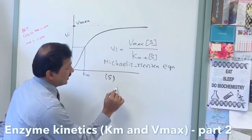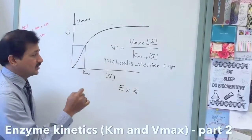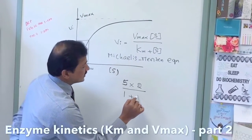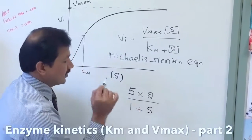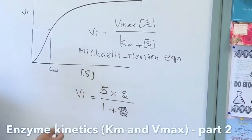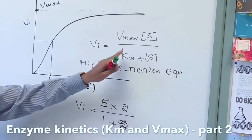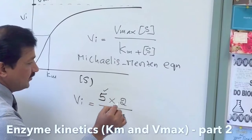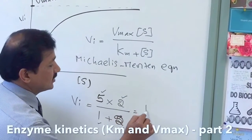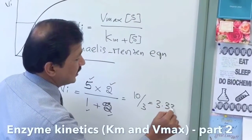Consider this example: Vmax is 5, substrate concentration S is 2, and Km is 1. We want to find the velocity of the reaction. Using the Michaelis-Menten equation — initial velocity equals Vmax times S divided by Km plus S — we plug in: 5 times 2, divided by 1 plus 2, which gives 10 over 3.